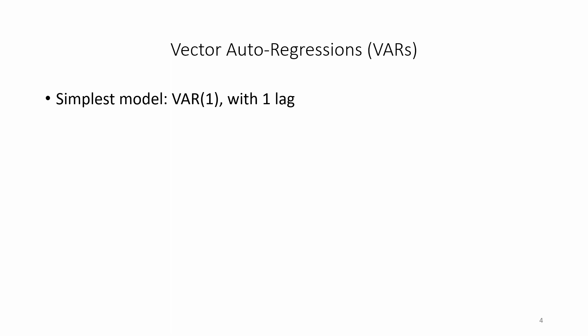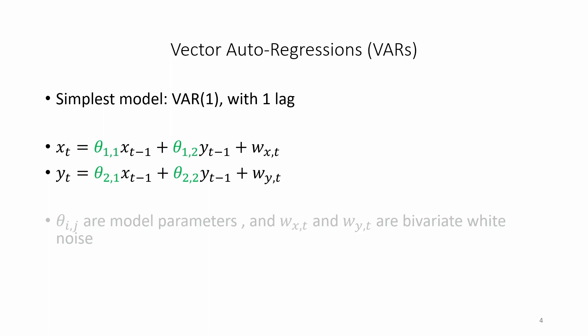Estimating a var can be as easy as estimating two OLS regressions. The first line would be x depends on lagged values of x and y. Then y depends on lagged values of x and y. This gives us a matrix of coefficients theta 1 1, theta 1 2, theta 2 1 and theta 2 2 shown here in green.